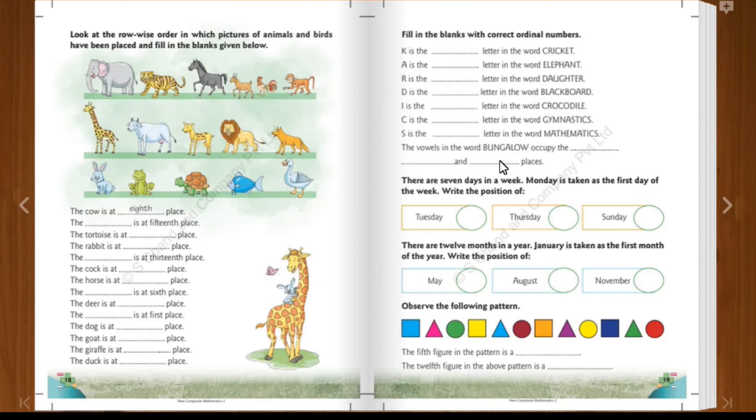Then now, the next case is Tuesday. Tuesday is which day? If Monday is the 1st day, Tuesday will be 2nd day. And Thursday will be 4th day. Then Sunday will be 7th day. Just see the order. Monday, Tuesday, Wednesday, Thursday, Friday, Saturday, Sunday. So count and say the position.